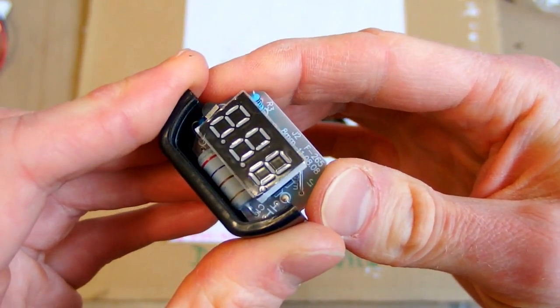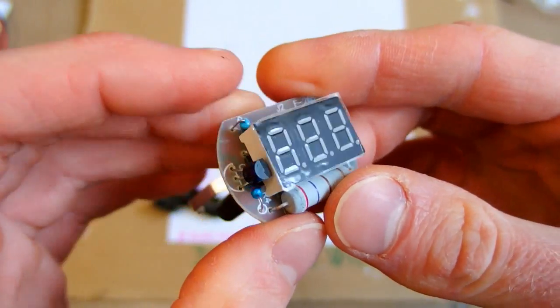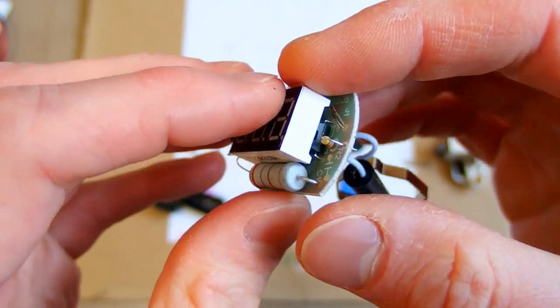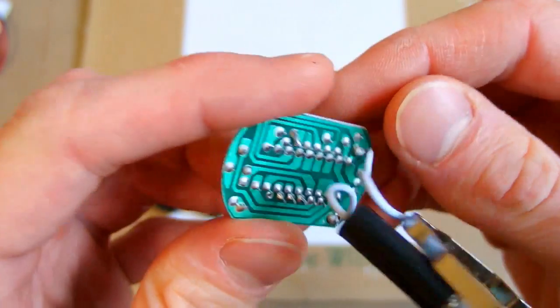There is a tiny board with a display, one very big resistor, another three resistors, and a transistor. And there is some chip under the display. And that's it.